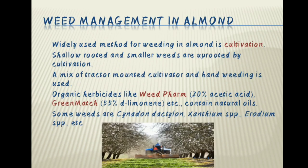Weed management in almond. The widely used method of weeding in almond is cultivation. Shallow rooted and smaller weeds are uprooted by cultivation. A mix of tractor-mounted cultivator and hand weeding is used. Organic herbicides like Weed Farm having 20% acetic acid, Green Match having 55% D-limonene, etc., contain natural oils. Some weeds are Cynodon dactylon, Xanthium species, and Erodium species.